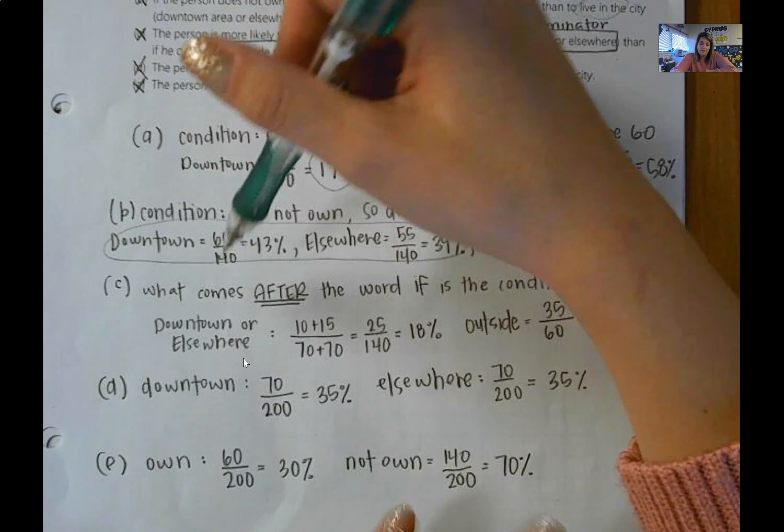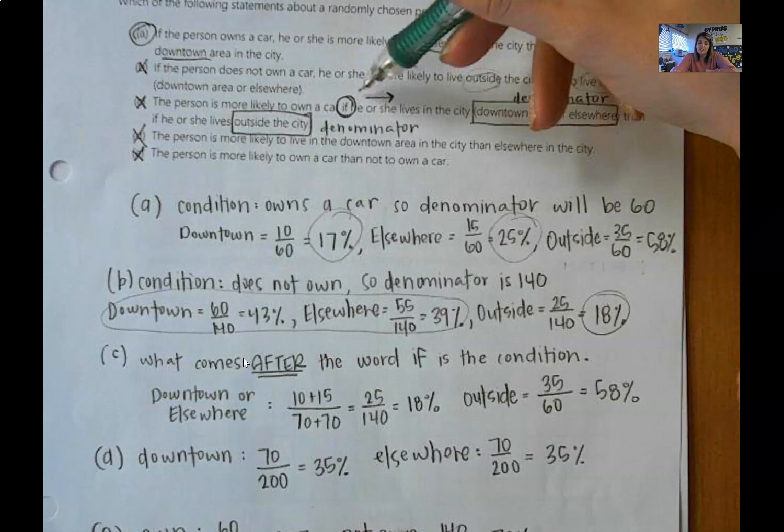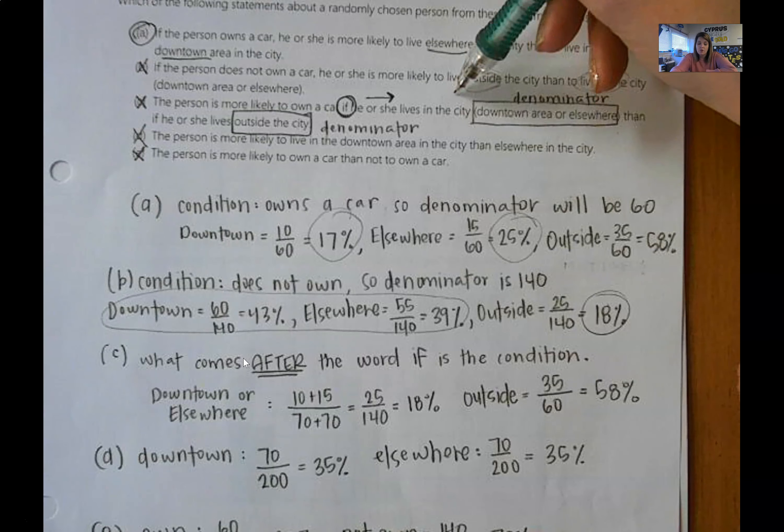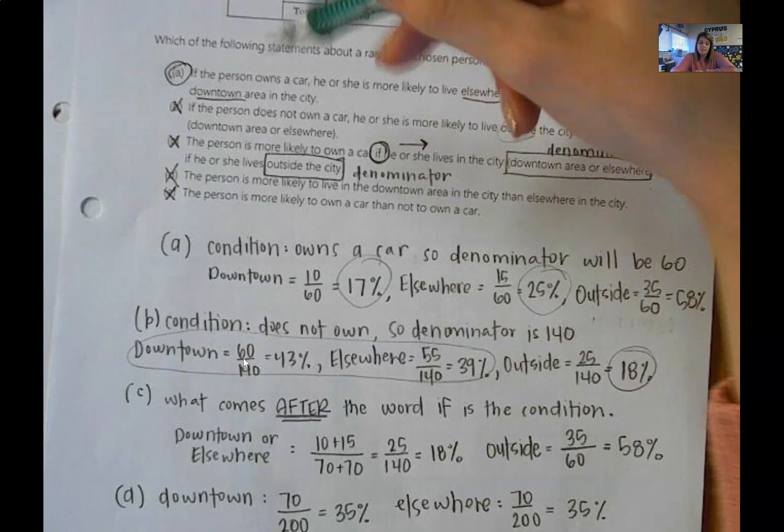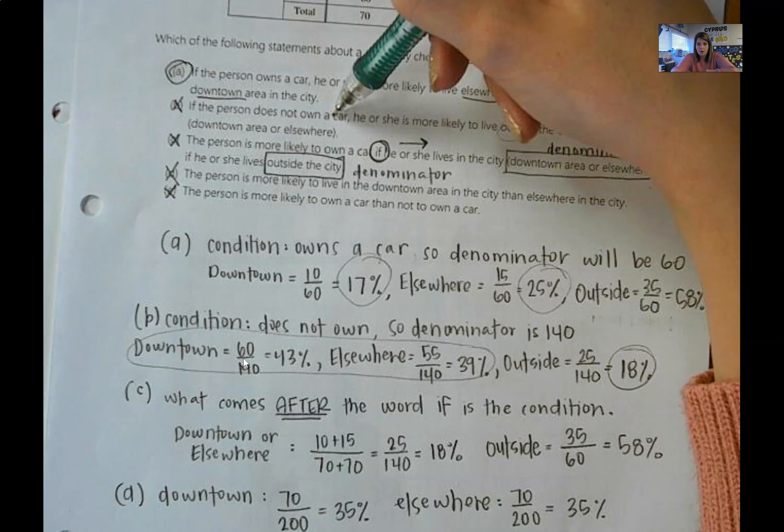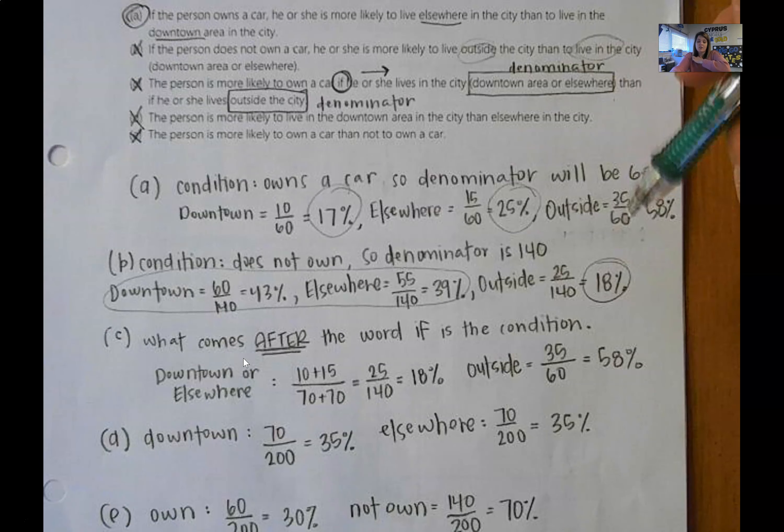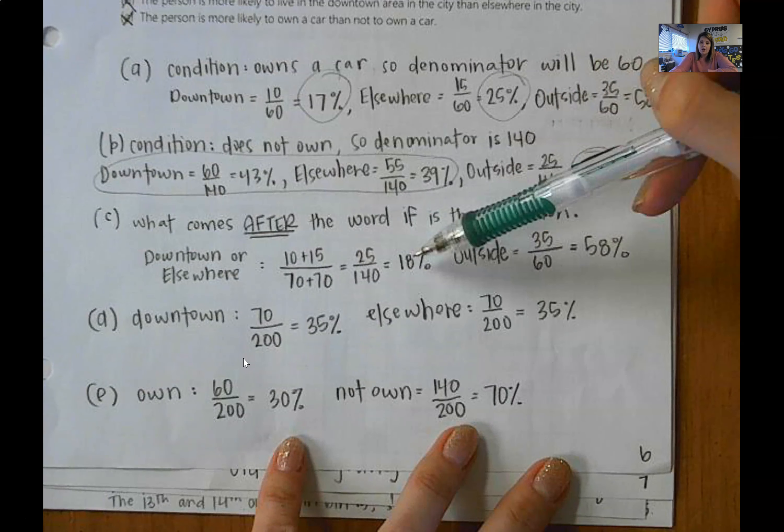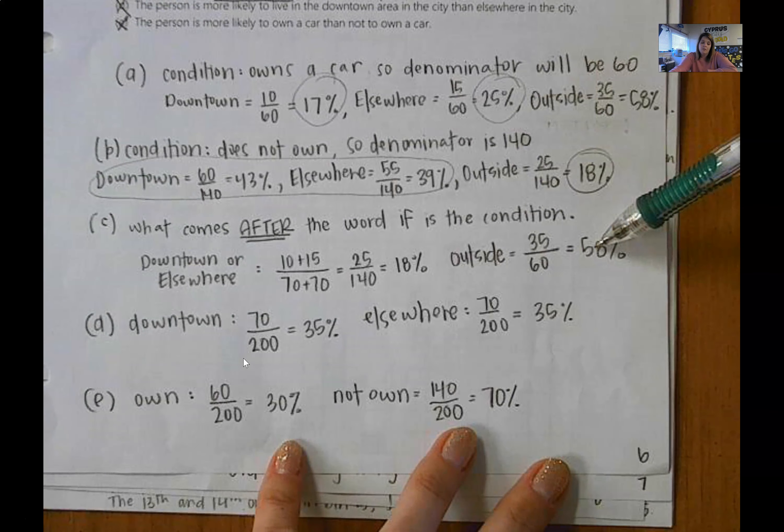There's a very important note that I have here. Whatever comes after the word if is your condition. So in this case, the if was in the city versus outside of the city. Up here, notice that it starts with if, if the condition is owns the car, if does not own a car. So whatever comes after the if is what you put in the denominator. And this one is interesting because the denominators are different. So in the city, the people that own a car is 18% outside of the city. The people that own a car is 58%. So C is not true.